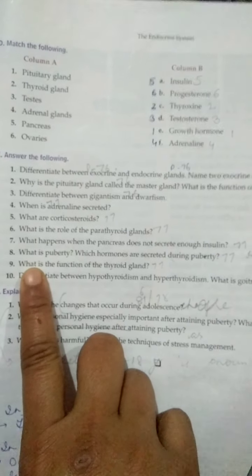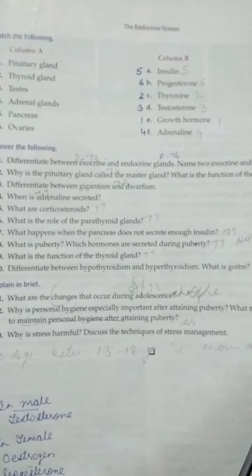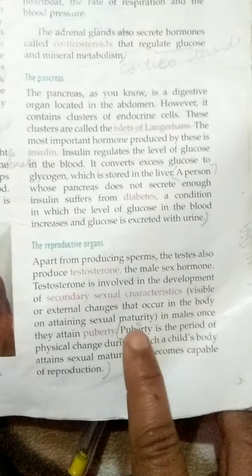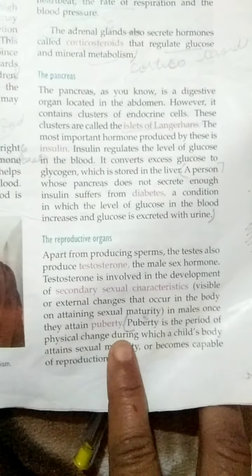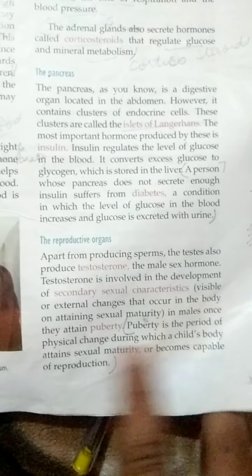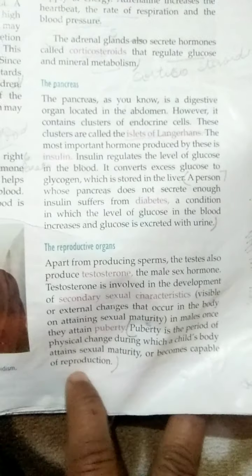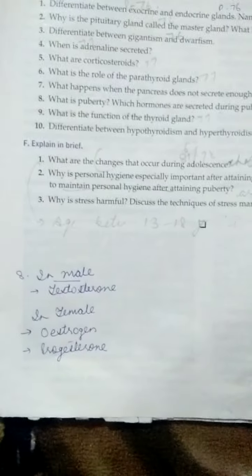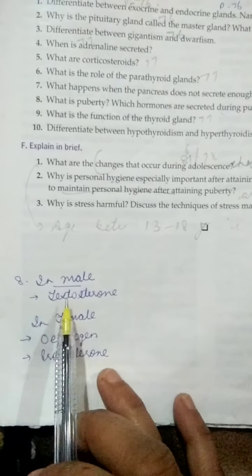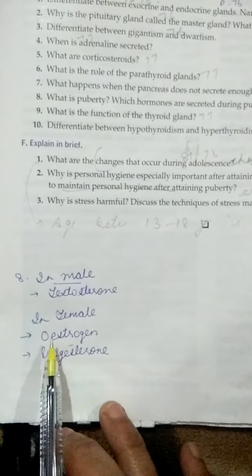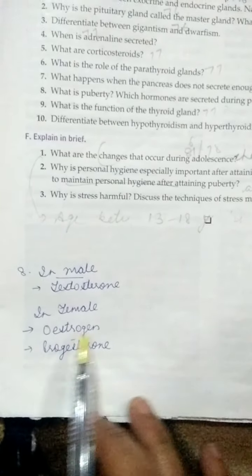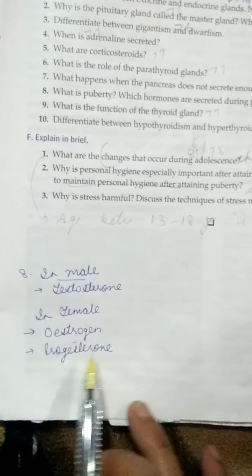Question number eight: what is puberty, and which hormones are secreted during puberty? For the definition, come to page number 77. Puberty is the period of physical change during which a child's body attains sexual maturity or becomes capable of reproduction. Hormones secreted during puberty: in males, testosterone; in females, two hormones are secreted — oestrogen and progesterone.